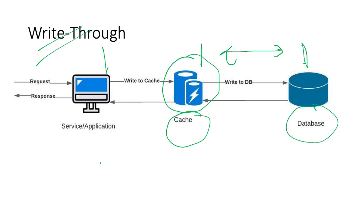The benefit of write-through is indirect: it maintains consistency between the cache and the database when coupled with the read-through strategy. With read-through, you are reading from the cache, and if the cache is always kept up to date via write-through, there is a higher degree of consistency and you don't need to invalidate the cache constantly. One real-world example of read-through and write-through working together is the DynamoDB DAX accelerator, which uses this strategy extensively.